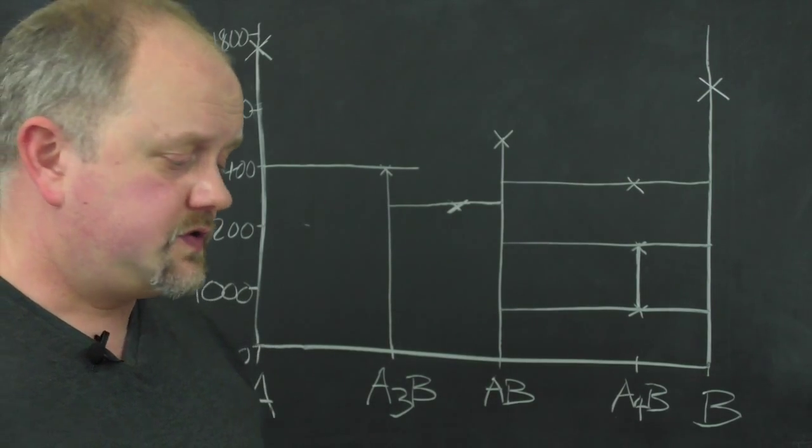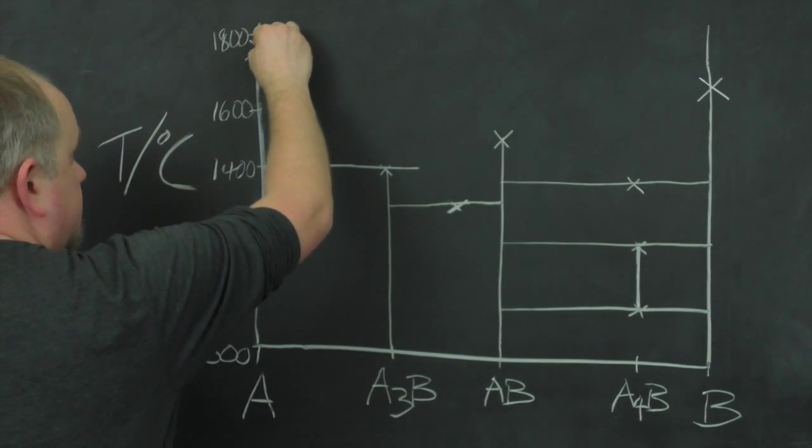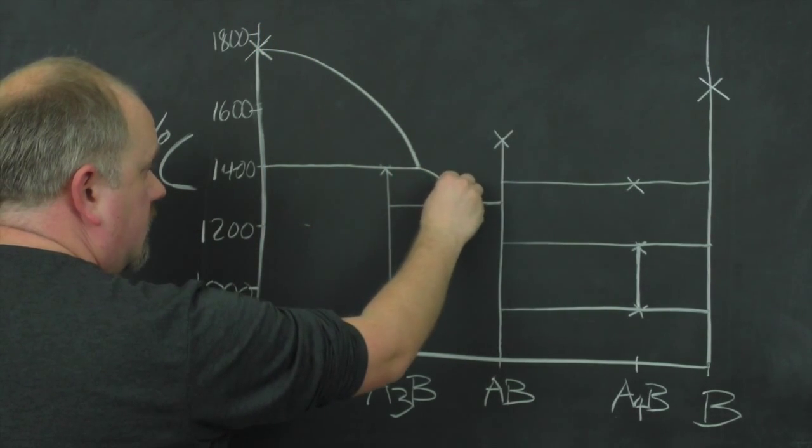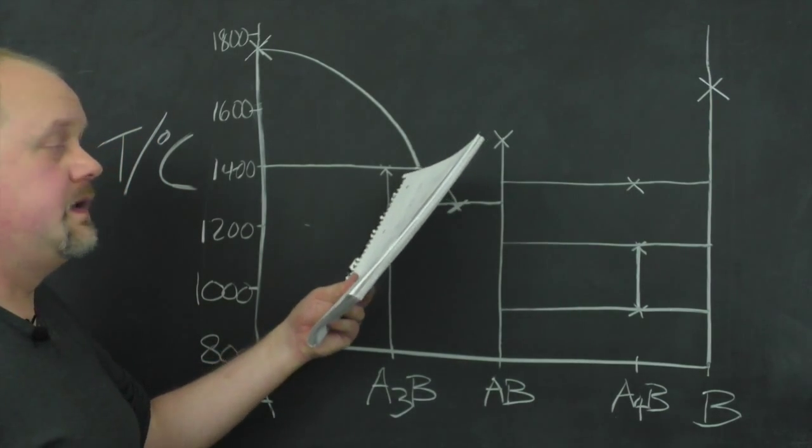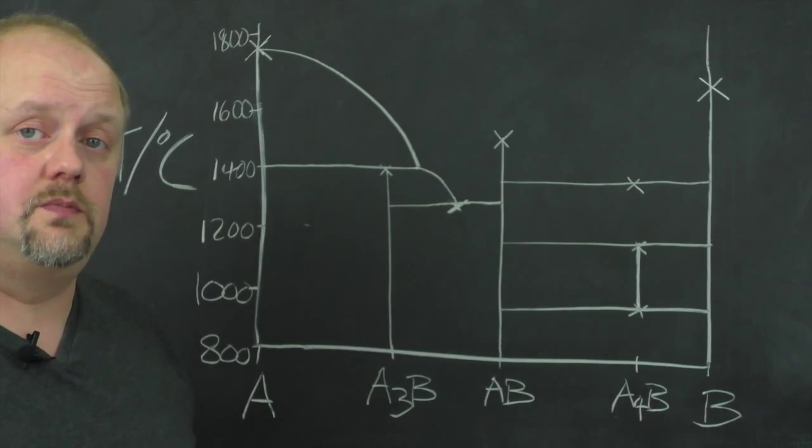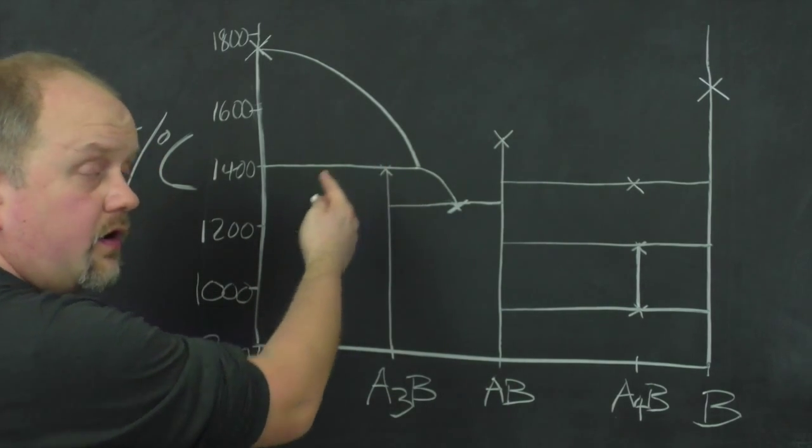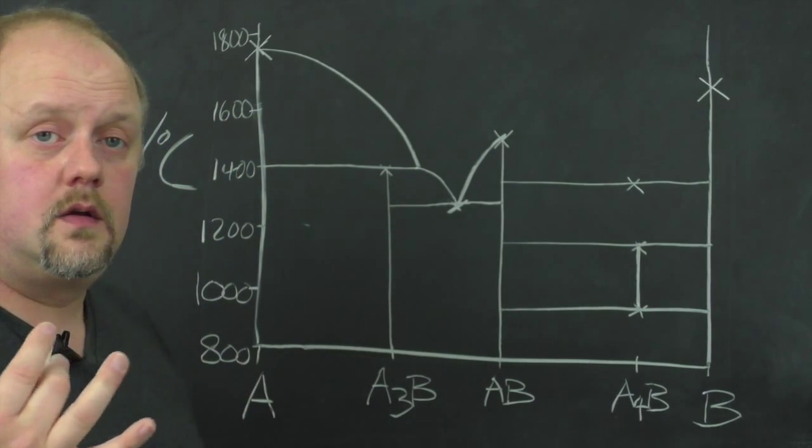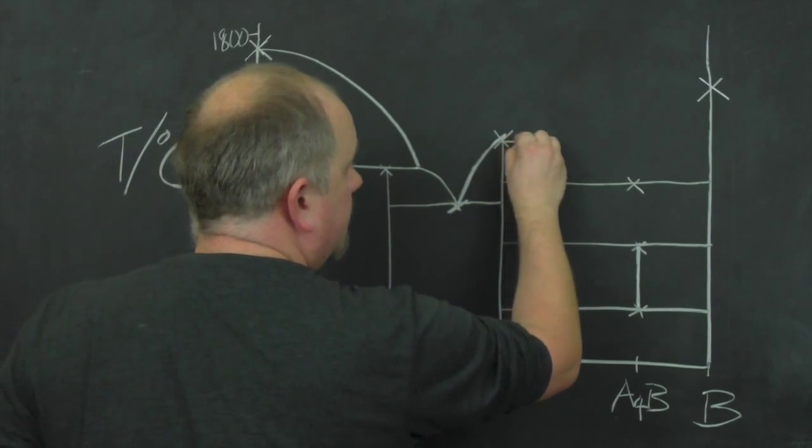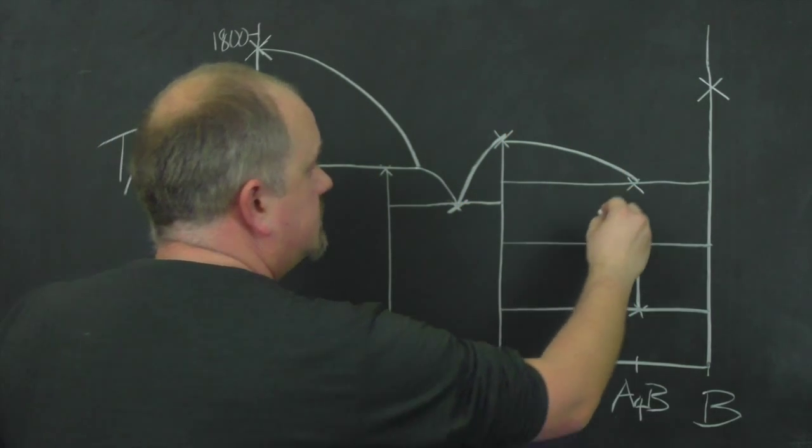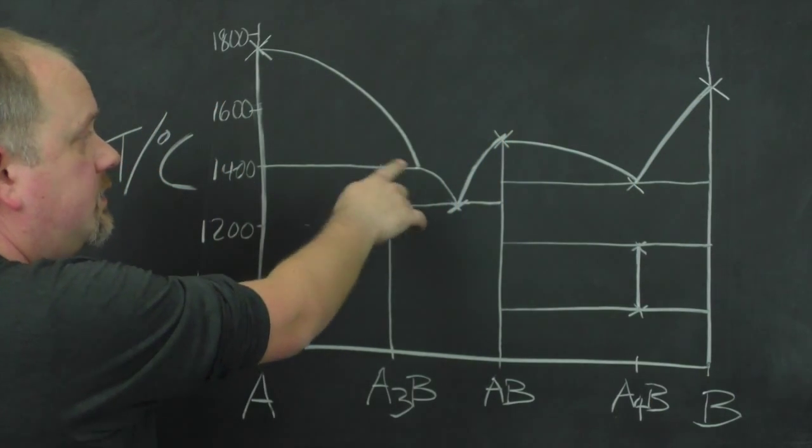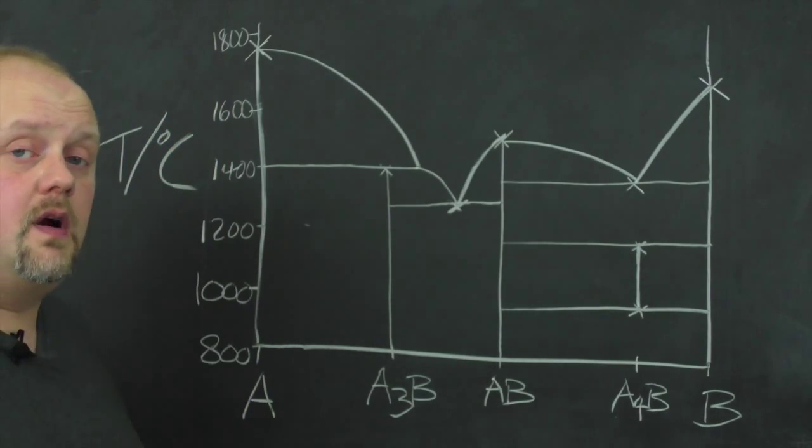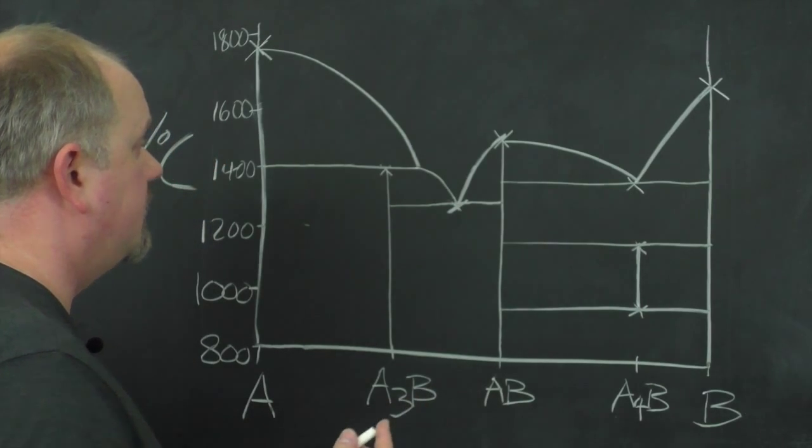And then it's a simple case of joining the dots. So we know this needs to come down from A through the peritectic point here and onto the eutectic. We don't know from the information we're given exactly where this peritectic point should be, but it doesn't matter. We can make a reasonable guess and we won't be far off. And then it goes up to the congruently melting AB phase and over to the next eutectic and up to B. So we've got a reasonable shape for our liquidus. It might not be perfect, but it's a realistic shape.